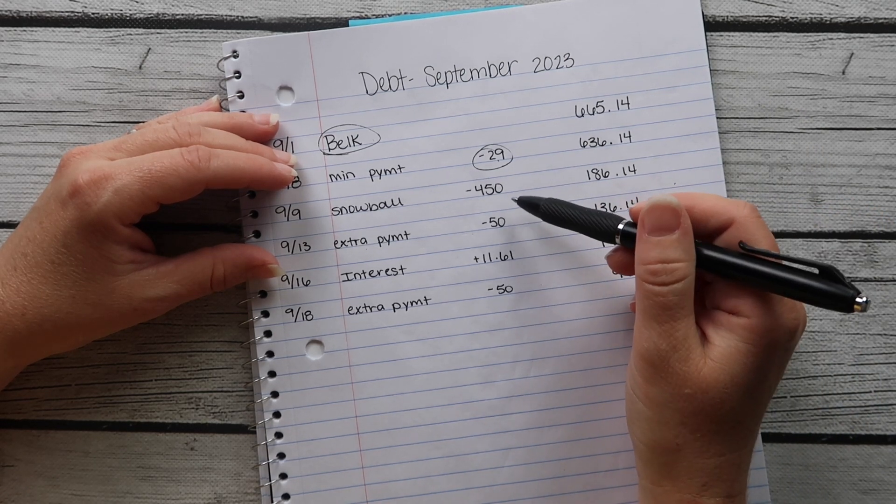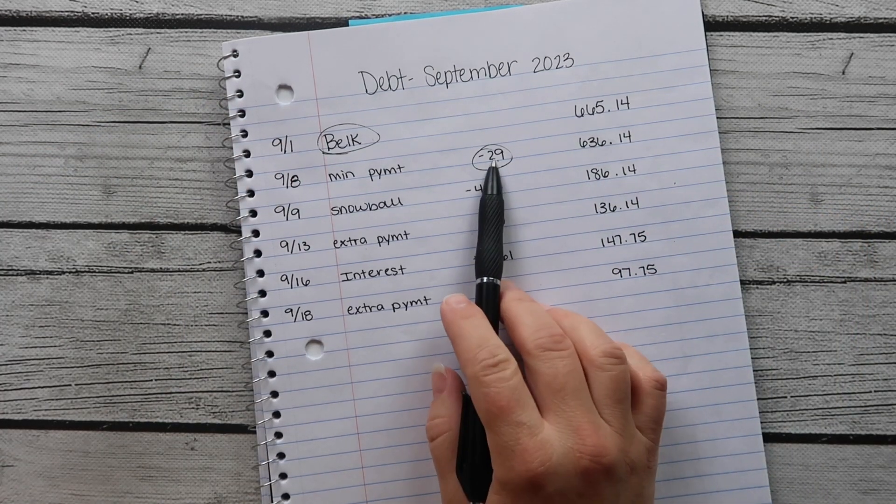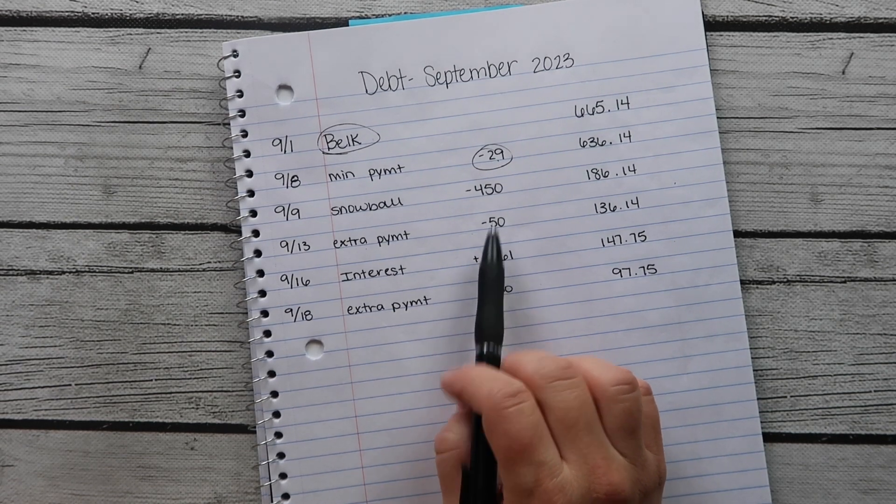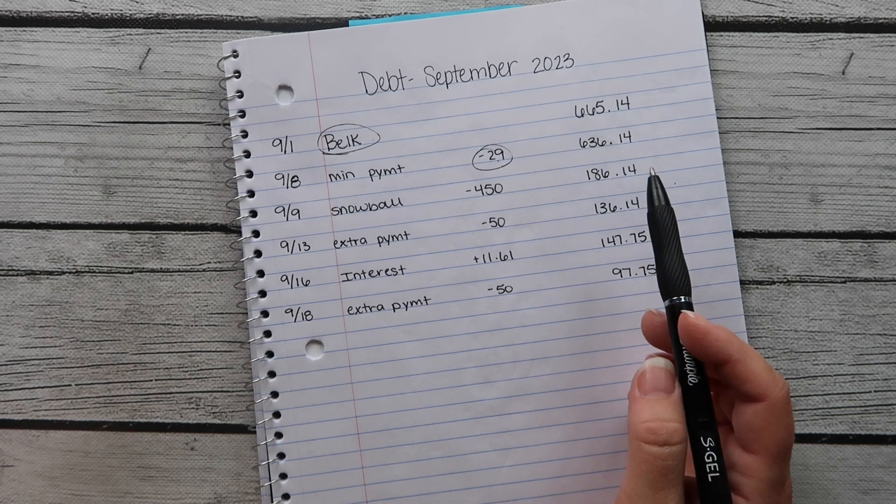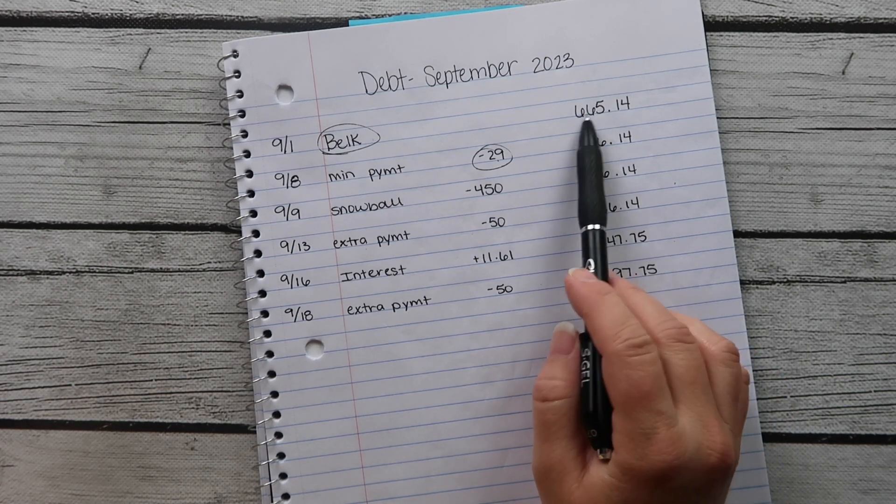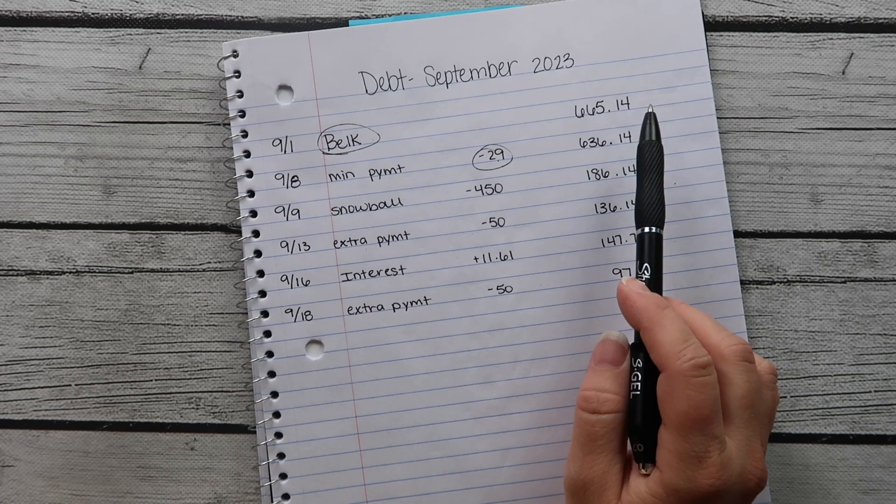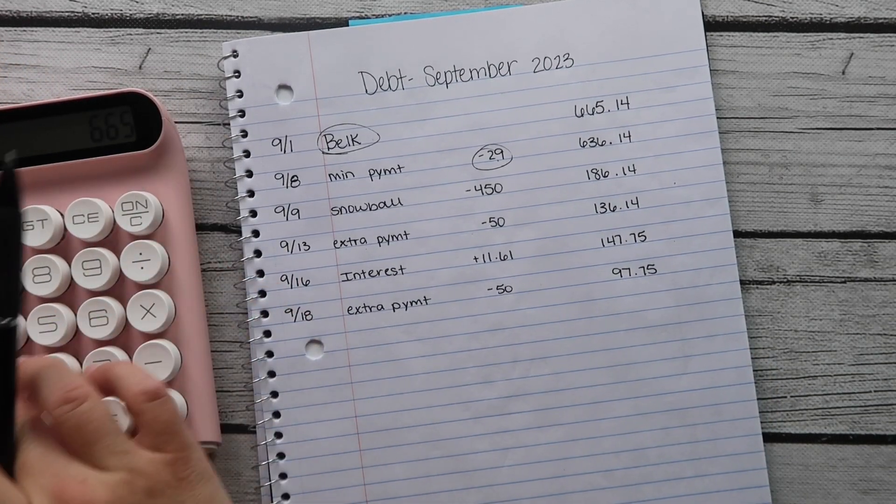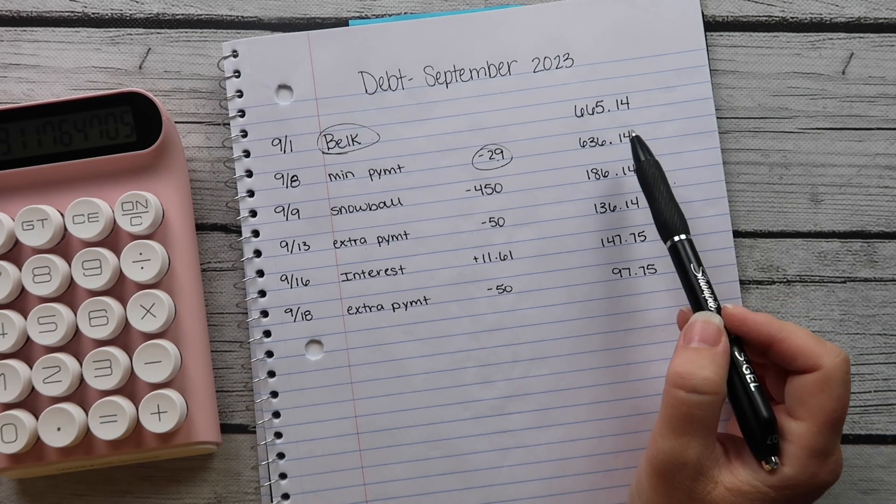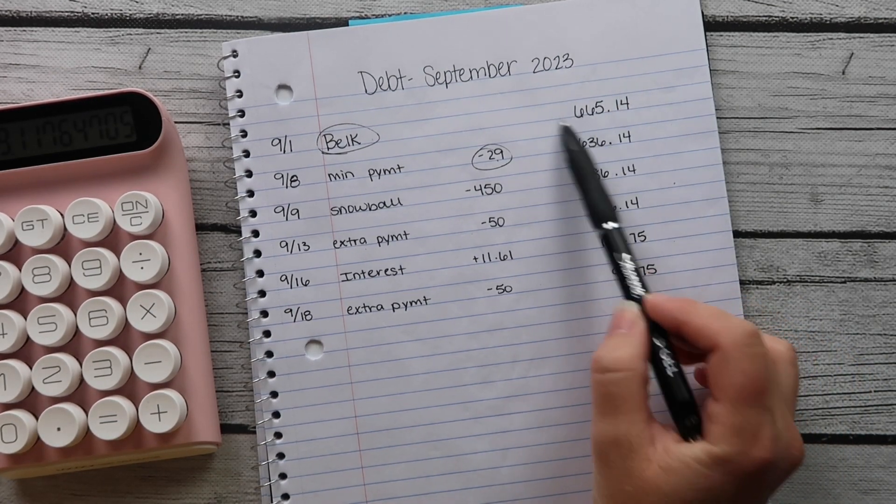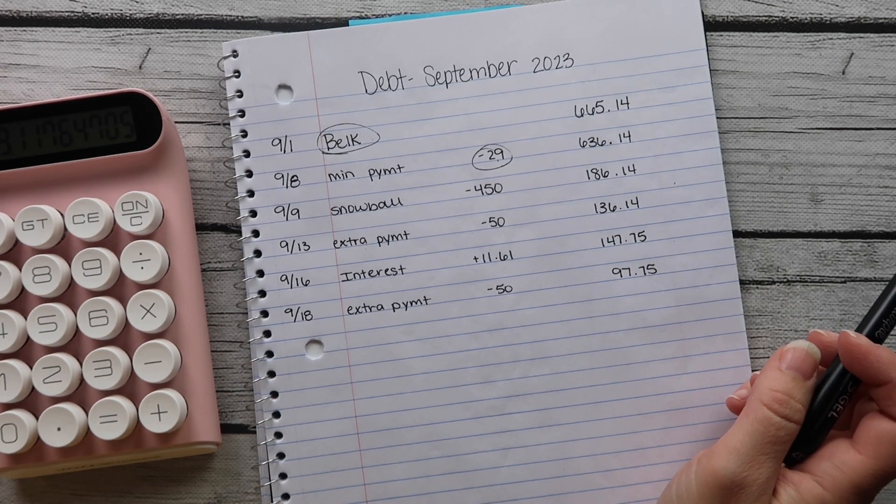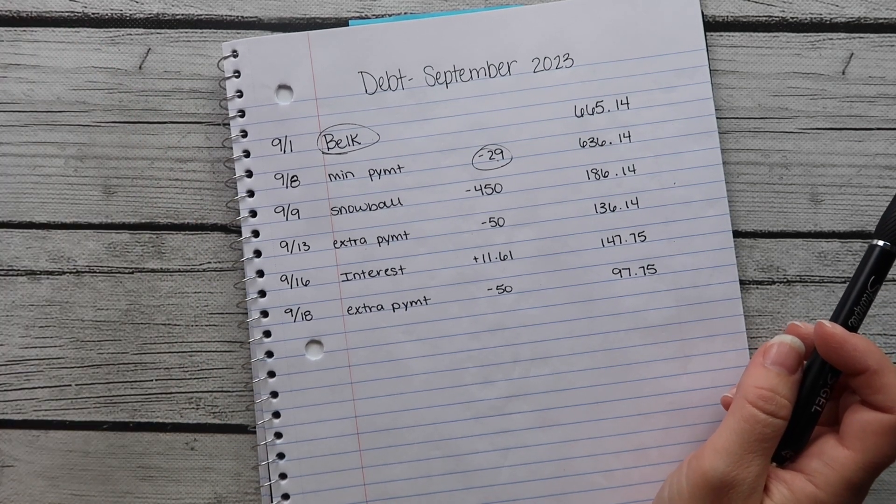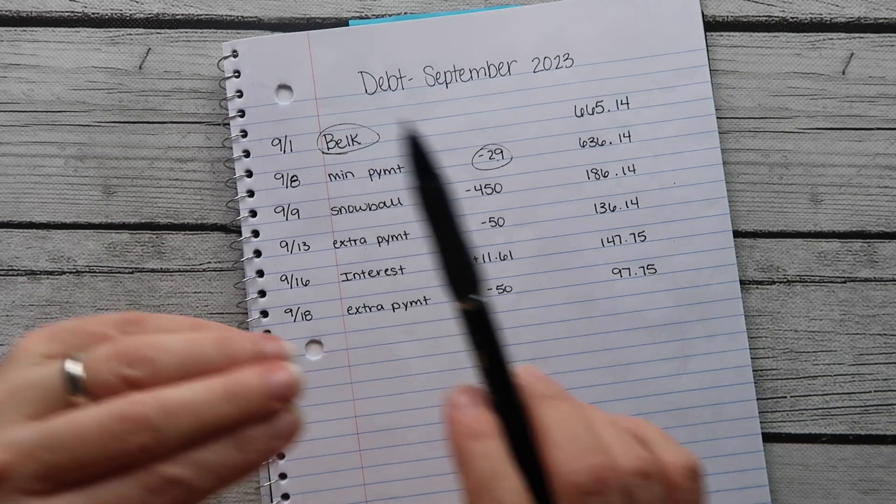Because you can see $29 and right at $12 of that is interest, so that would only come down about $17 a month. Do you know how long it would take to pay that off at $17 a month? $665 divided by $17, it would take me 39 months to pay that off. It would take me over three years to pay that off which is ridiculous.